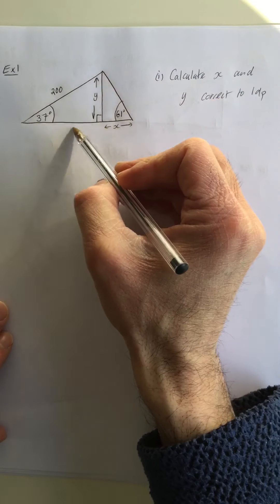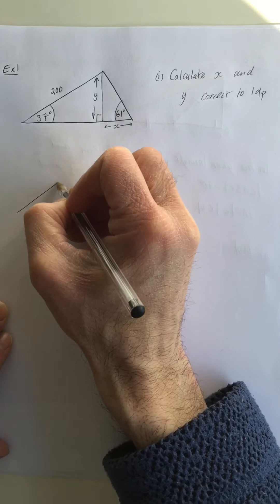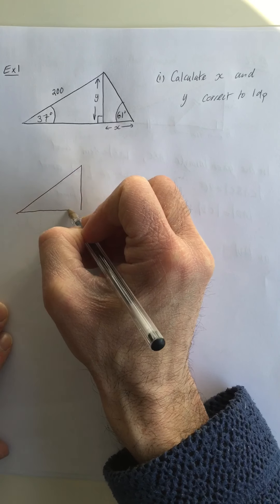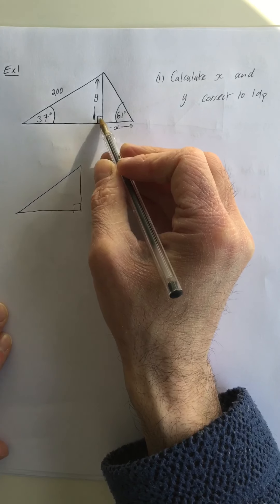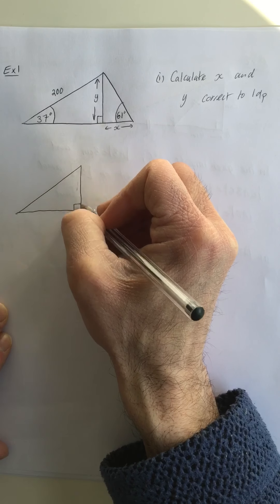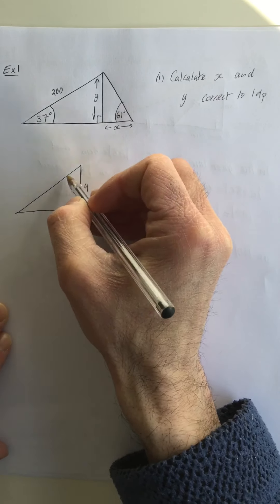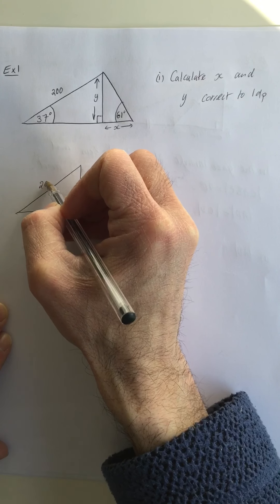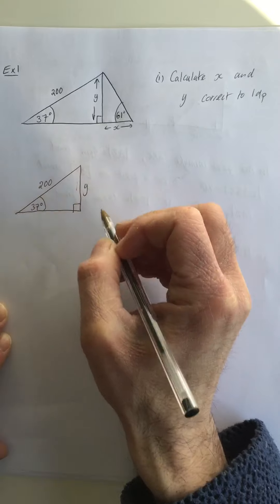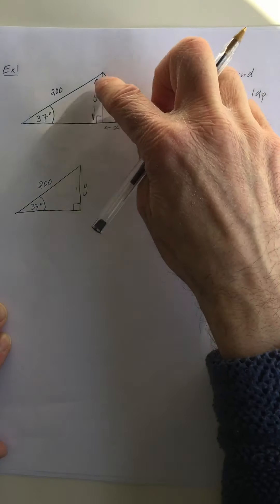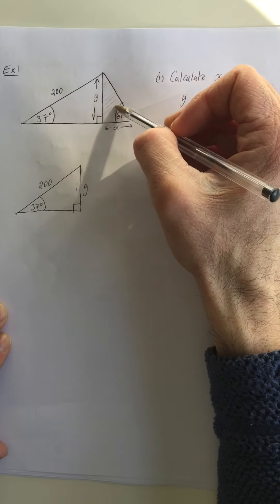So what I'm going to do is draw this left hand triangle on its own, just a sketch, it doesn't have to be drawn accurately. I can tell it's a right angle triangle because of this. The height here is y, and I know that this side here is 200, and I know the angle that's here is 37 degrees.